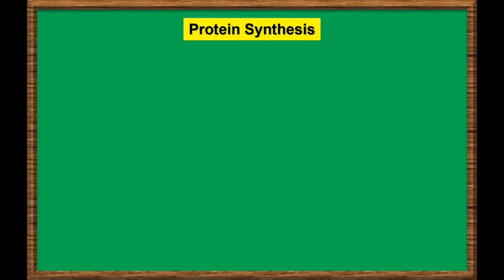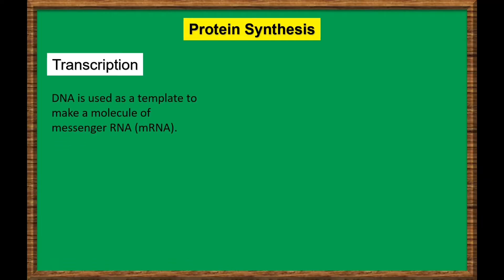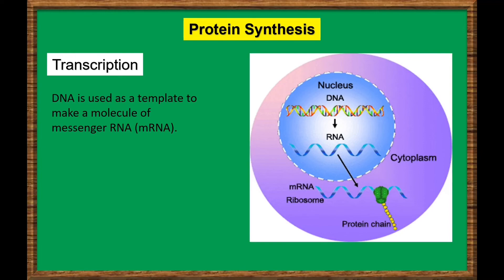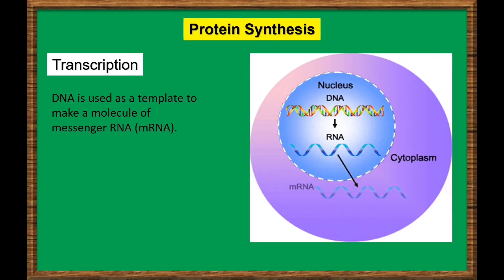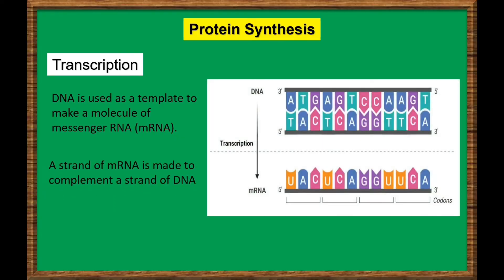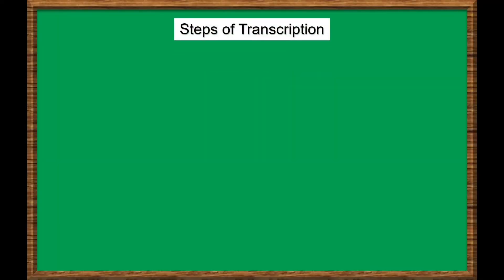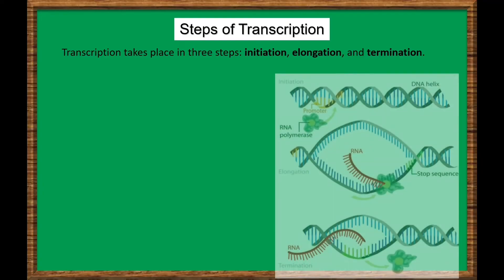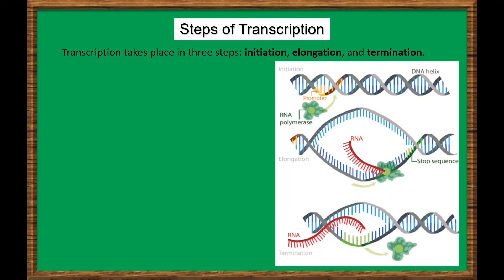Let's start with the first stage of protein synthesis: transcription. During transcription, DNA is used as a template to make a molecule of messenger RNA. The molecule of mRNA then leaves the nucleus and goes to a ribosome in the cytoplasm, where translation occurs. During transcription, a strand of mRNA is made to complement a strand of DNA. Transcription has three steps: initiation, elongation, and termination.